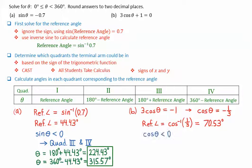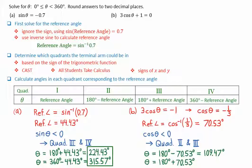In this case, cosine of theta is less than 0, or negative. This corresponds to terminal arms in quadrants 2 and 3. The angles in standard position, then, first in quadrant 2, 180 degrees minus the reference angle, giving 109.47 degrees. And in quadrant 3, 180 degrees plus the reference angle, resulting in 250.53 degrees.